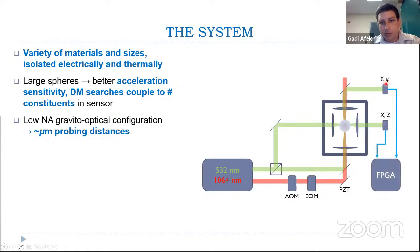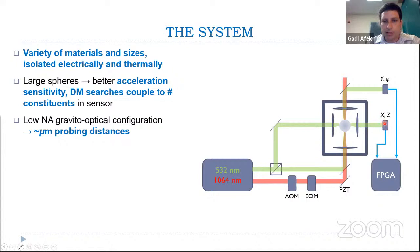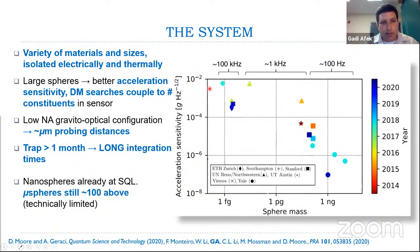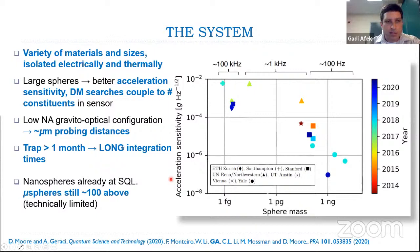We use a low-NA beam for optical access, a 532-nm laser to image the sphere, projecting onto an array of sensors to sense center-of-mass and rotational degrees of freedom. These are fed back via an FPGA to a piezo-activated mirror, AOM, and EOM for separate degrees of freedom. These traps last for about a month. When comparing optically levitated systems, these microspheres reach very good acceleration sensitivity — the best for optically levitated objects, though still about 100 times above the standard quantum limit.